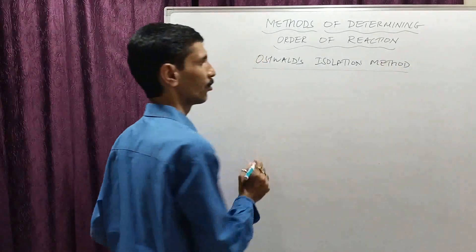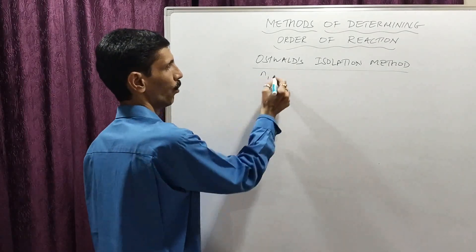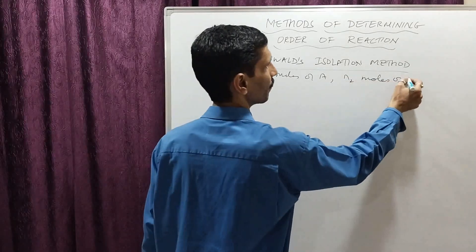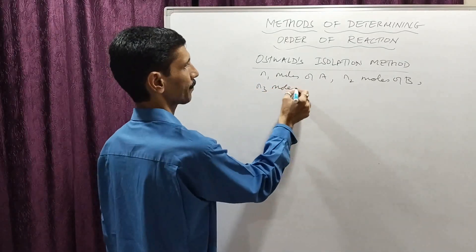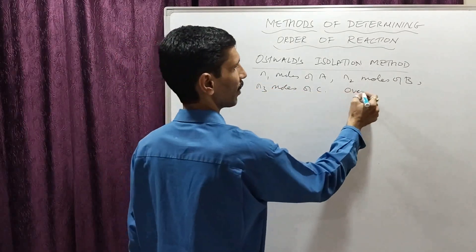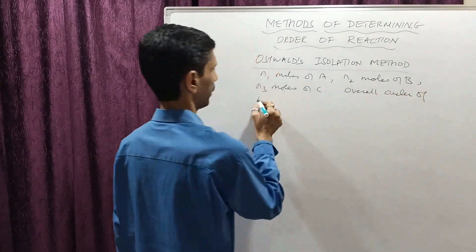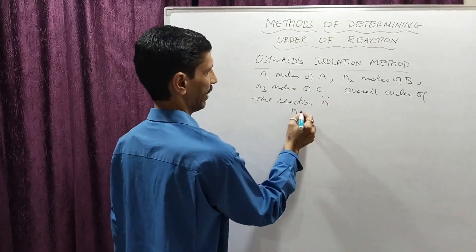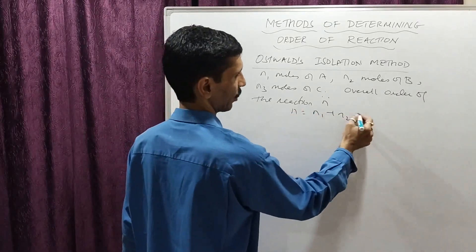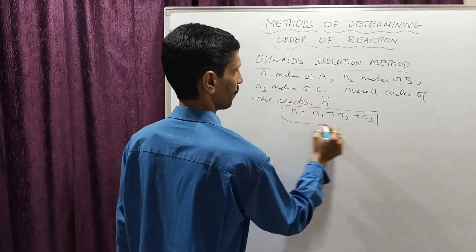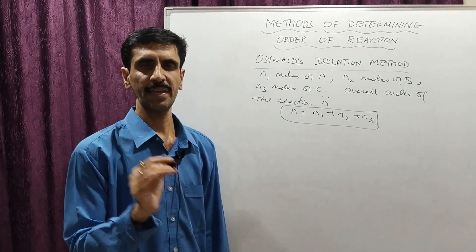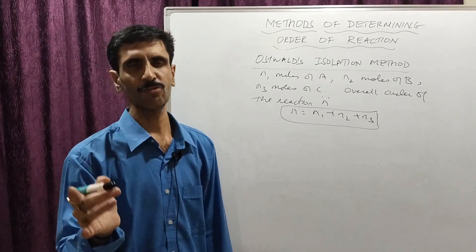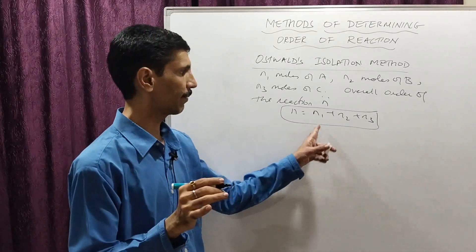In Ostwald's isolation method, assume we have n1 moles of A reacting with n2 moles of B reacting with n3 moles of C. The overall order of the reaction is given as n equals n1 plus n2 plus n3. With three reactants A, B, and C having moles n1, n2, and n3 respectively, the overall order is n1 plus n2 plus n3.